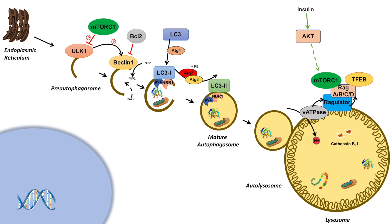When mTOR complex 1 is activated, it not only inhibits ULK1, but it also phosphorylates and inhibits transcription factor EB (TFEB), which is the master regulator of lysosomal biogenesis. Additionally, when the cell is in a fed state, there are transcriptional repressors within the nucleus — ZKSCAN3 and FXR — which inhibit the transcriptional activation of autophagy. TFEB is phosphorylated in this state, which prohibits it from entering the nucleus.